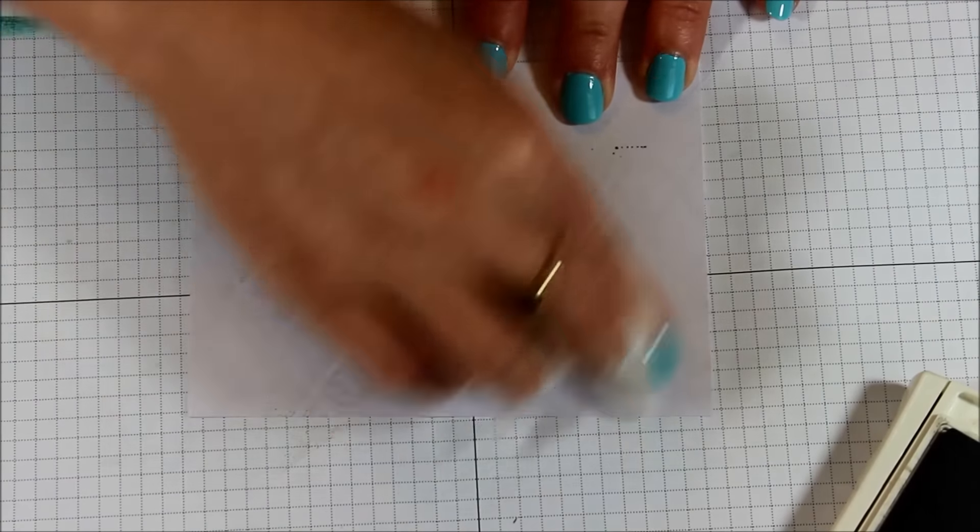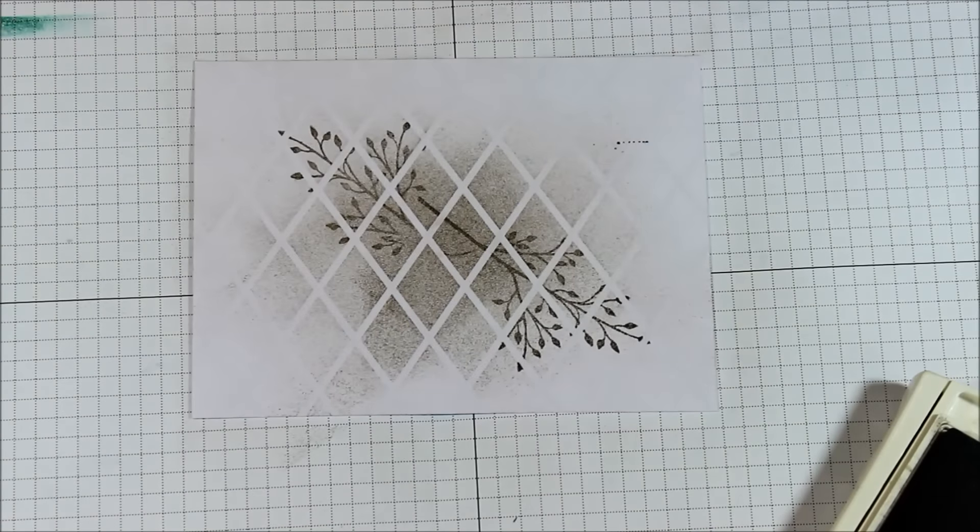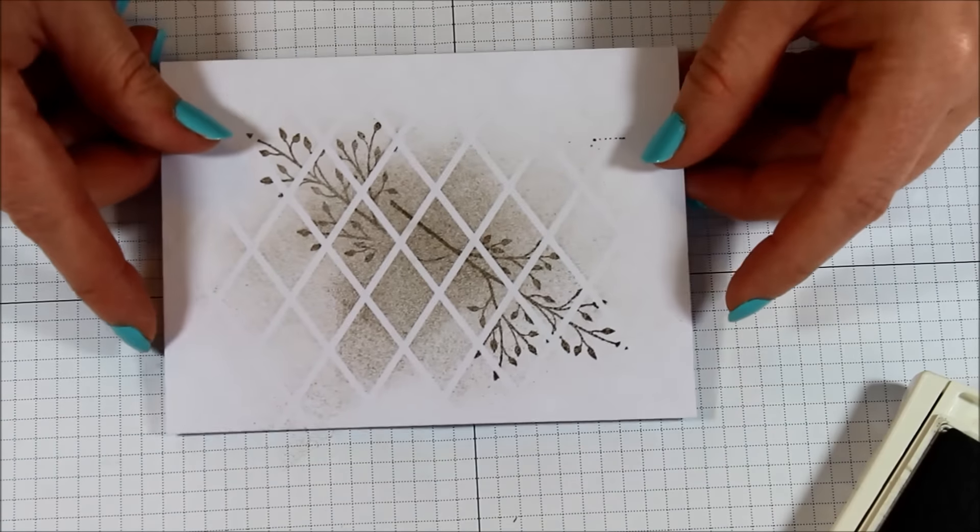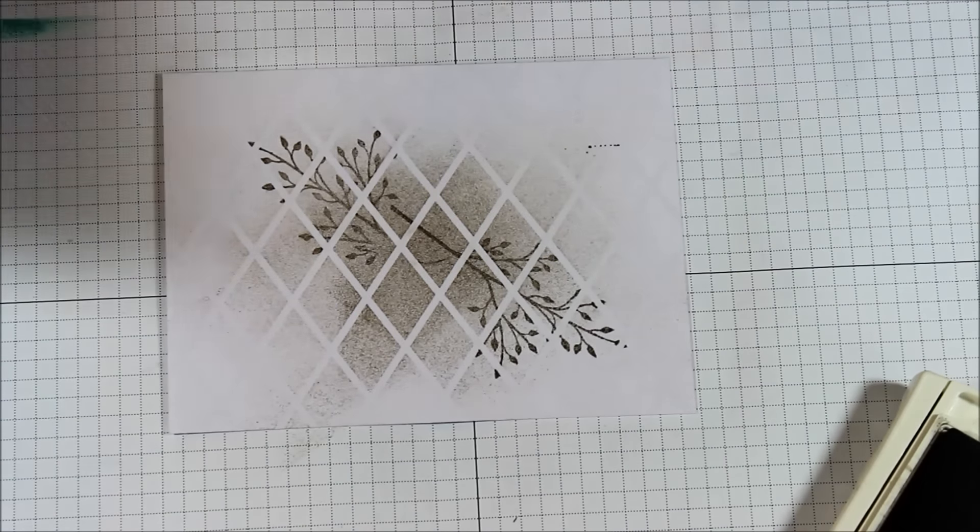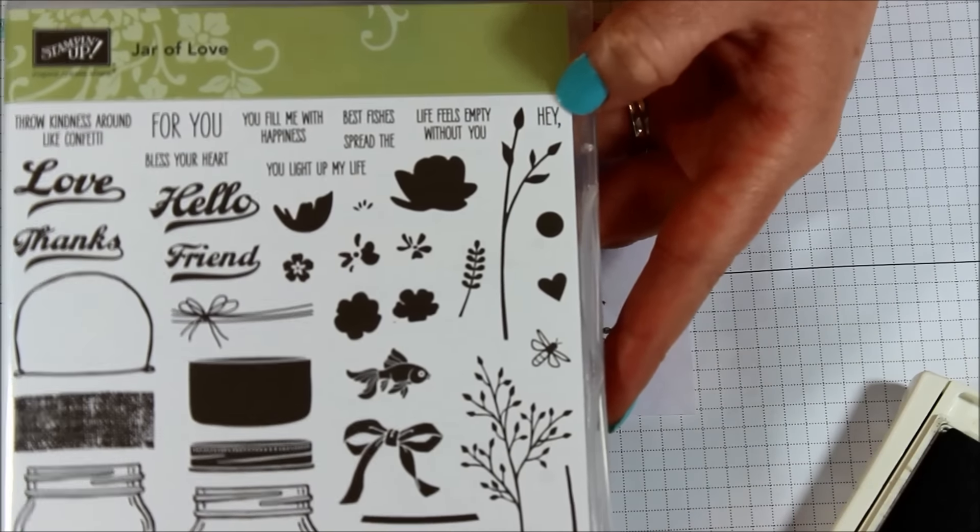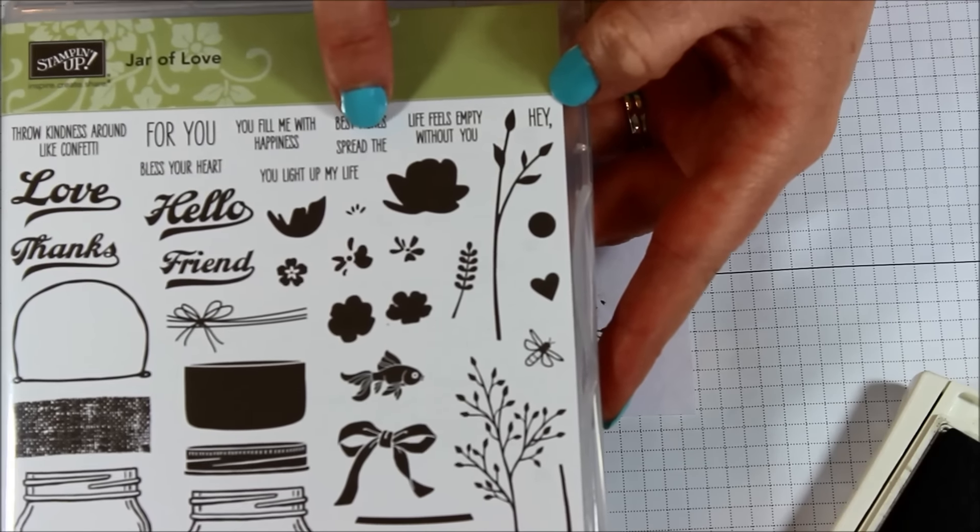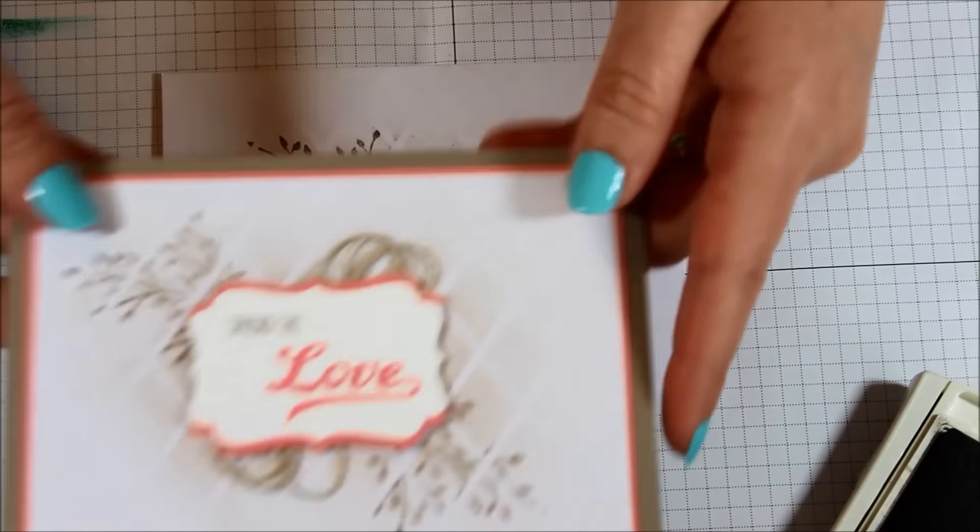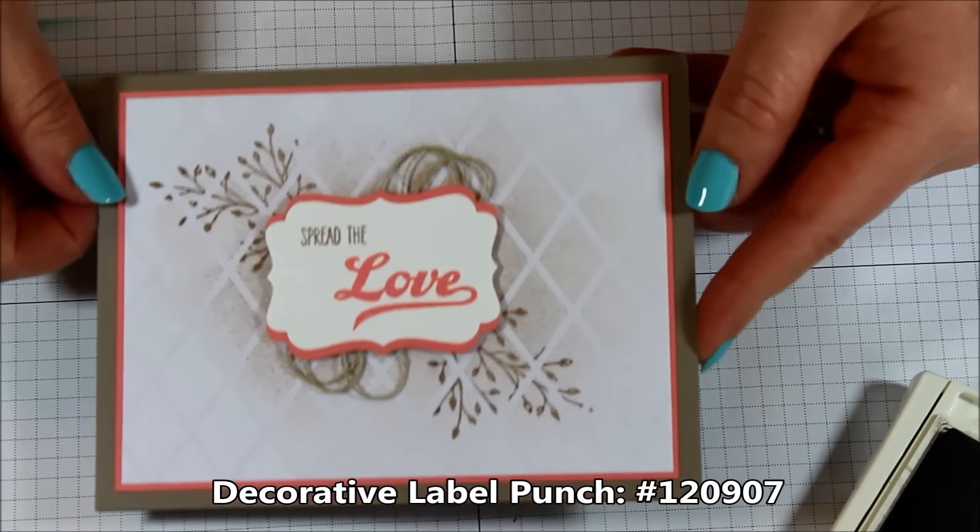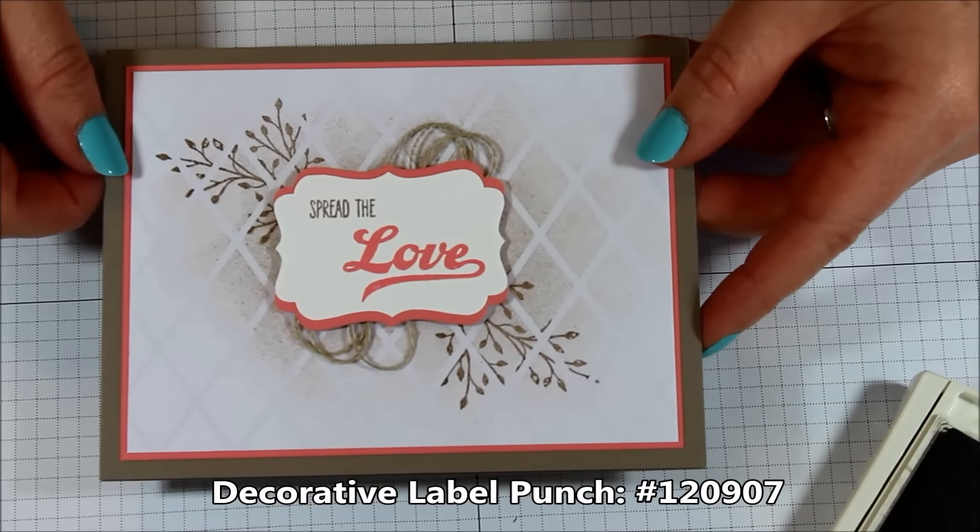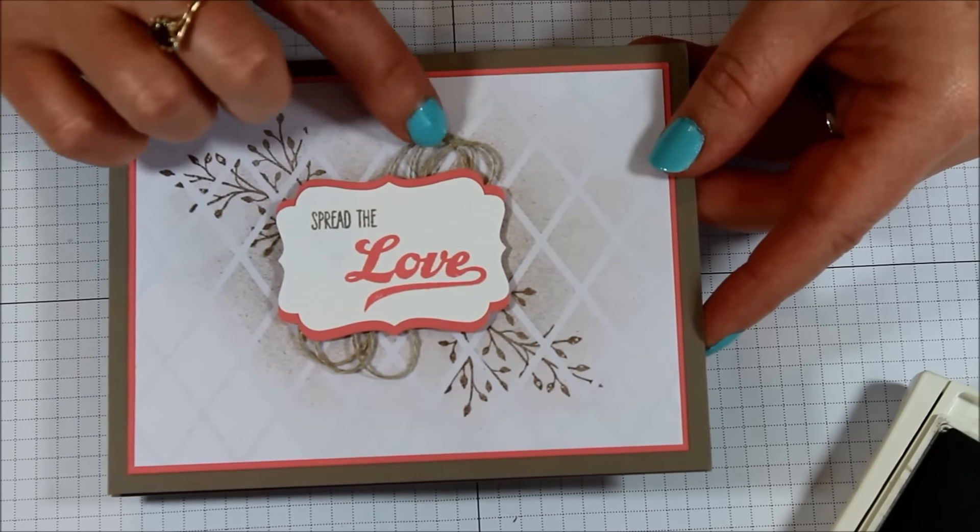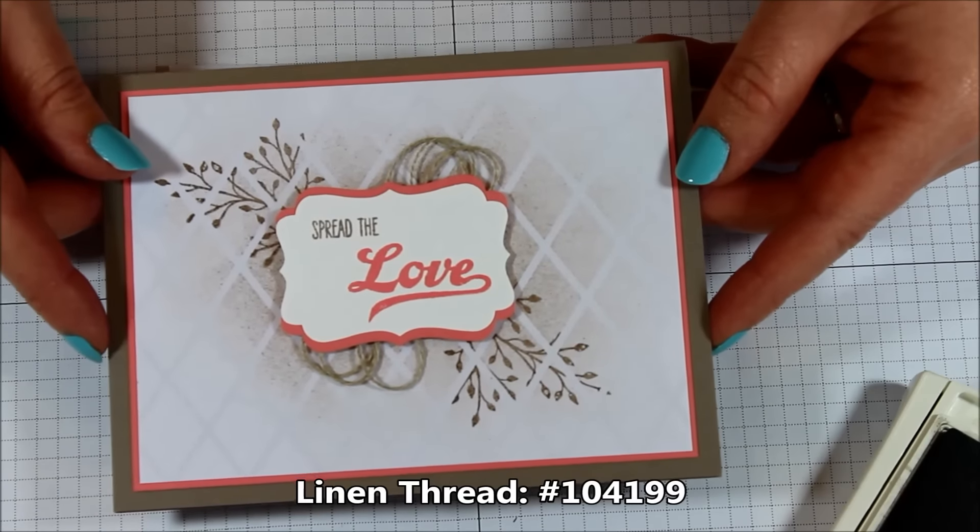After that I just took the two images from that same Jar of Love stamp set. I used the word Love and stamped it in Flirty Flamingo. And I used the word, let's see, Spread The. So Spread the Love. I stamped it down in Tip Top Taupe, Flirty Flamingo, and I punched it out with the Decorative Label Punch, one of my favorites. Then I actually punched a second one in the Flirty Flamingo, cut it in half, added a layer to the top and to the bottom. Then I did the little linen thread loops on the back and added it to my card with Stampin' Dimensionals.